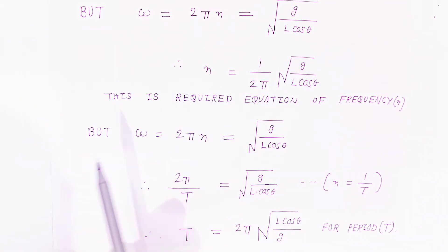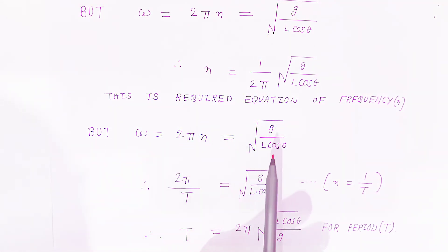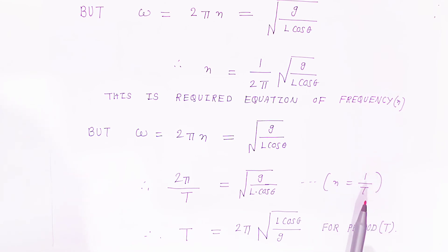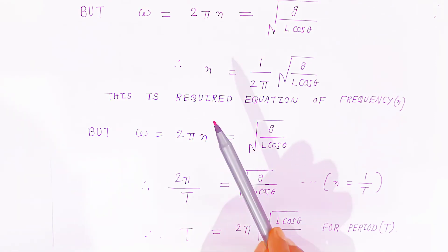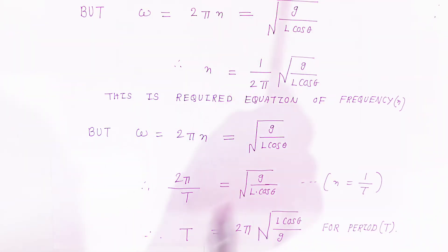The third expression to calculate is the time period. Since frequency n = 1/T, substituting gives T = 2π √(L cosθ / g). This is the expression for the time period of the conical pendulum. So we now have angular velocity, frequency, and time period of the conical pendulum.